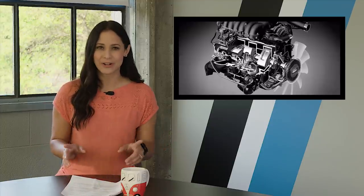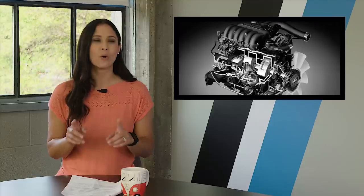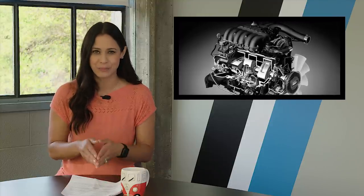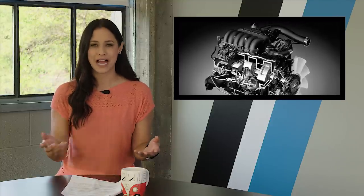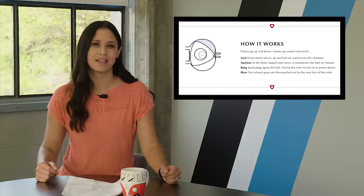First up, the Wankel, otherwise known as a rotary engine, is best known for powering the Mazda RX-7. Now what makes it so strange? It only has three moving parts. The two rotors and the output shaft. There's no pistons, no cams, no valves, no timing belts, none of that. It's crazy to think about.